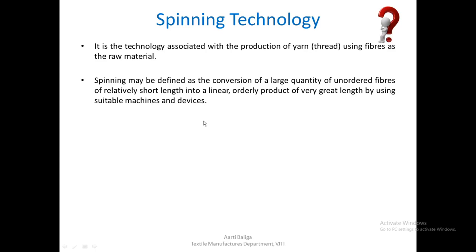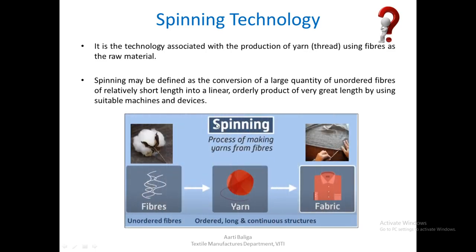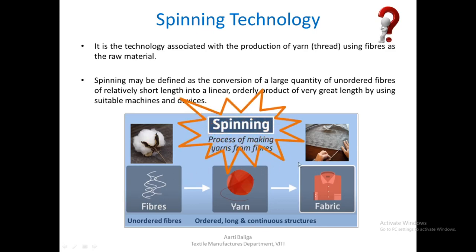When you look at the definition it looks quite complicated, but it can be put in the form of an image like this: fibers that are unordered are converted to make yarn, which is made up of ordered, long, and continuous structures. The process of conversion from fibers to yarn is known as spinning. We should remember that spinning is basically a process of making yarns from fibers.